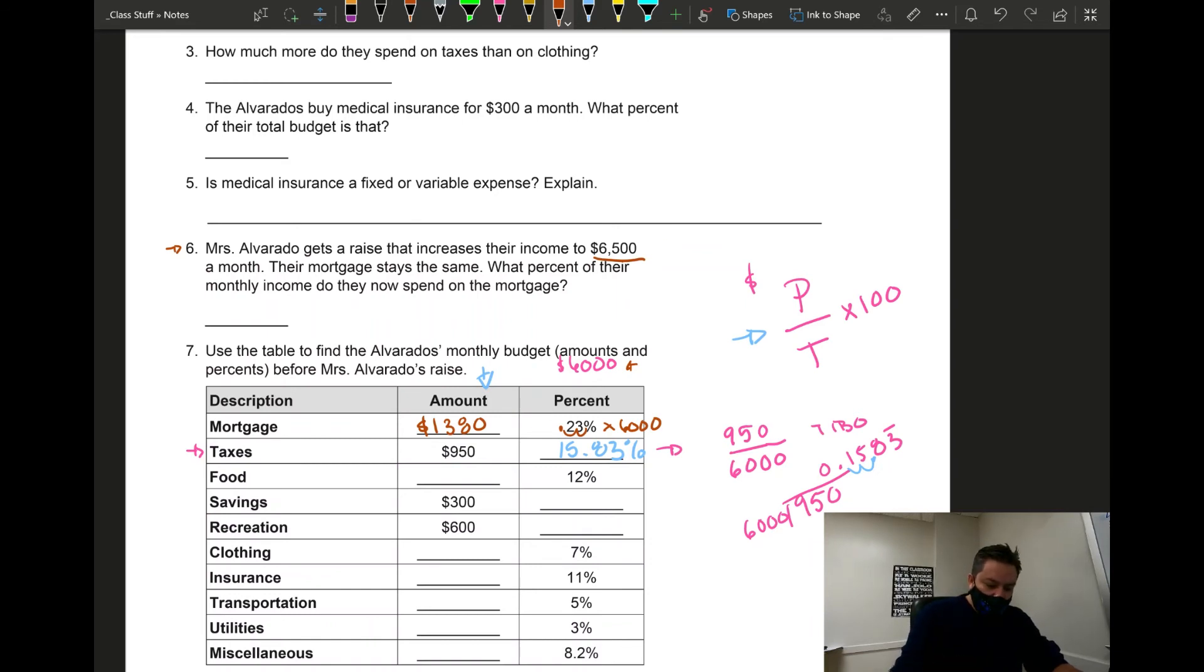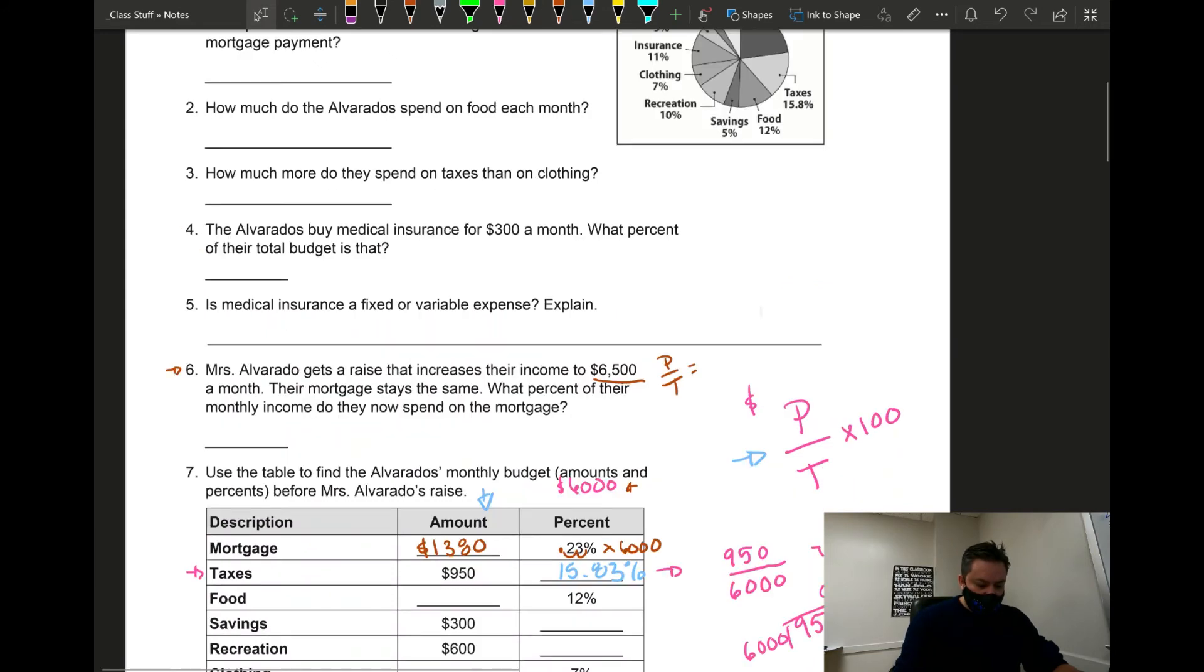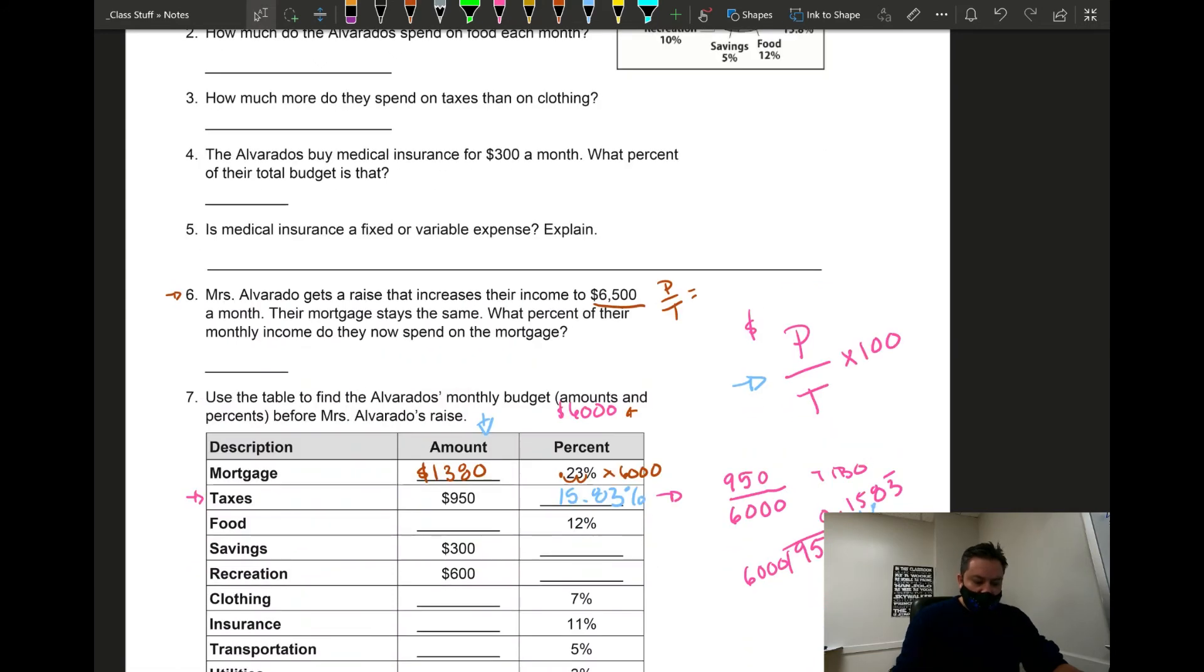You're going to do part over total, but in this case the mortgage is the same. So he got a raise but the mortgage did not change. The mortgage is $1,380 but the new total is $6,500. Divide and then move the decimal two places to the right and you're going to get the answer for number six.